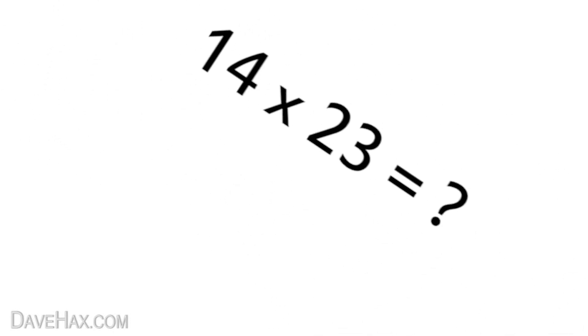Today I'm going to show you a really simple way to multiply two numbers together. This technique originates from Japan and involves substituting numbers for lines.